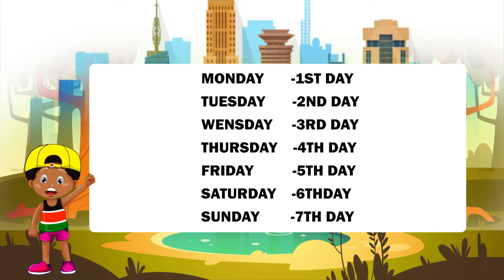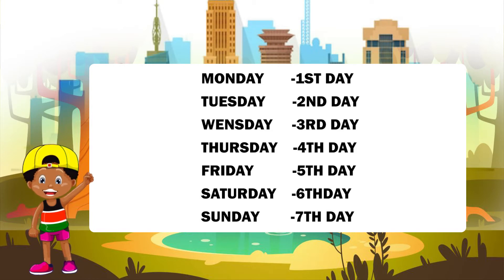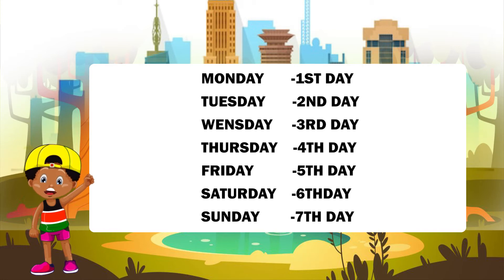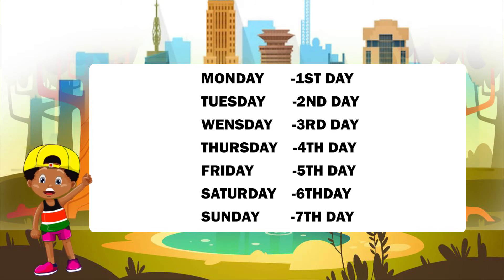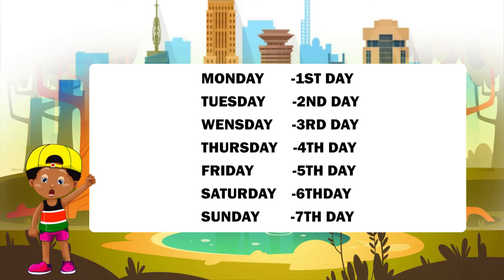We have seven days in a week. Monday is the first day. Tuesday is the second day. Wednesday is the third day. Thursday is the fourth day.